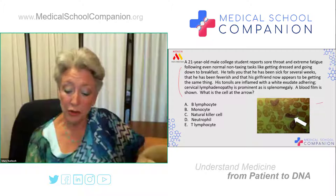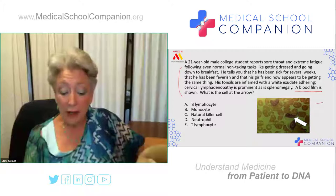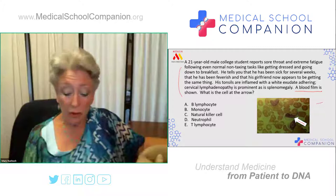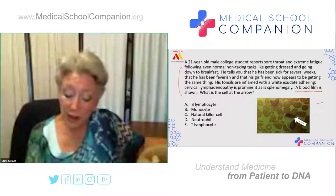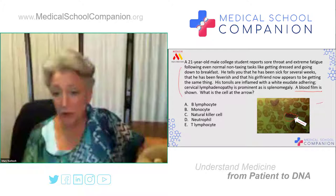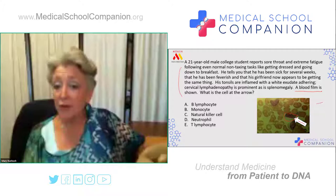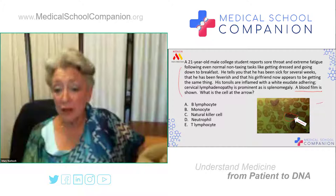The only difference between this stem and the last is that they're showing you a blood film. That blood film asks what is the cell at the arrow — which requires you to recognize that the cell is not a red blood cell but a white blood cell. Because it's a very unusually shaped white blood cell, I now have to figure out what it is. I'm not going to be able to do it purely from the image; I'm going to have to think my way through the pathophysiology of the disease.